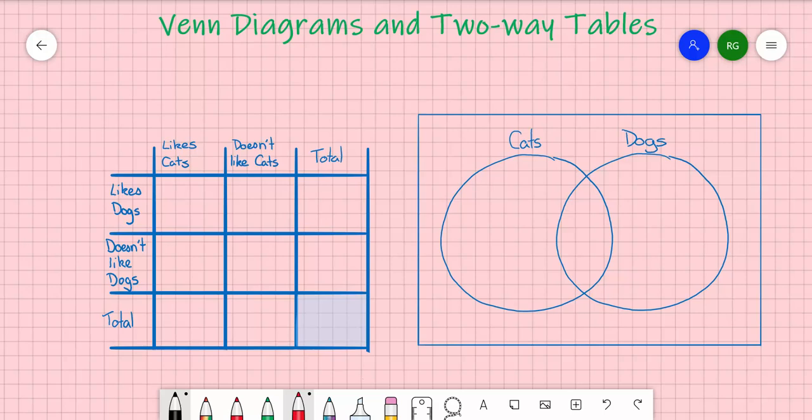Both of these methods are used for showing data that overlaps. An example that we're going to use today is we're going to do a survey of a group of people, and we're going to ask whether they like cats or don't like cats, and whether they like dogs or don't like dogs. In this case, it is possible to not like either cats or dogs, or you could be in the group of you like cats and you like dogs, or you could simply like one and not the other.